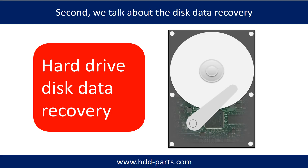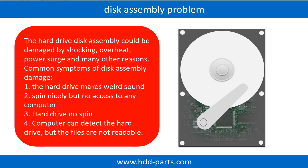Now let's talk about how to do disk data recovery by yourself. If the hard drive disk assembly is damaged, we can do disk data recovery to recover the data from the disks. The common symptoms of hard drive disk assembly failure are: hard drive makes weird sound, spins nicely but no access to any computer, or hard drive no spin. If the storage is configured as mirrored hard drives, you can take the bad hard drive out, put in another hard drive of the same size or bigger, and the storage will mirror the data to the new hard drive automatically.